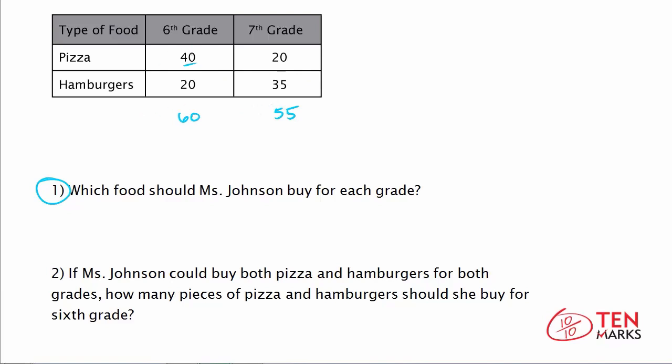So now let's take a look. In 6th grade alone, 40 students answered that they would prefer pizza for their celebration lunch, and 20 students replied that they would like hamburgers. So since more people want pizza, she can make the inference that the entire grade would most likely prefer pizza over hamburgers. So that means for 6th, she's going to get pizza.